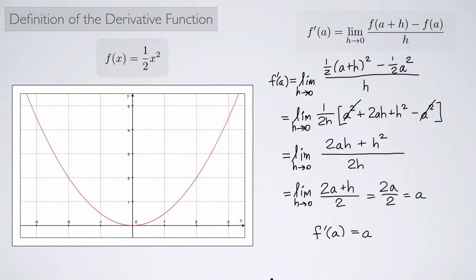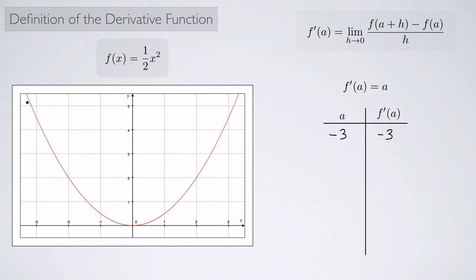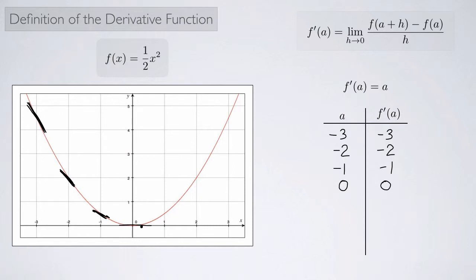Let's verify this with a chart. We found that f prime of a equals a. At negative 3, f prime is negative 3 — the tangent line has slope negative 3. At negative 2 it's negative 2, at negative 1 it's negative 1, getting shallower. At 0 it's 0, a flat line. At 1 the slope is 1, at 2 it's 2, and at 3 it's 3. This all makes sense from the graph.